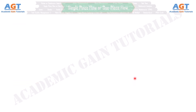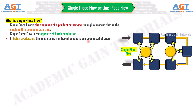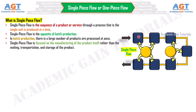Number 2: Single-Piece Flow, or One-Piece Flow. Single-piece flow is the sequence of a product or service through a process where a single unit is produced at a time. Single-piece flow is the opposite of batch production, where a large number of products are processed at once. Single-piece flow is focused on the manufacturing of the product itself rather than the waiting, transportation, and storage of the product.